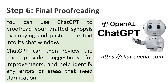The last step is final proofreading. You can use ChatGPT to proofread your drafted synopsis by copying and pasting the text into its chat window. ChatGPT can then review the text, provide suggestions for improvements, and help identify any errors or areas that need clarification. All important links can be found in the description. Let us know what you'd like to see next by leaving your comments. Thank you for watching, and wish you all the best.